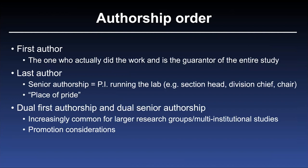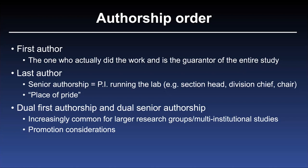Authorship order is important. First author should be — at least in our field and in the biological sciences — the individual who did the work and is the guarantor of the particular study. The last author position, a place of pride, is typically given to the senior individual, either the PI running the lab, your division chief, or chair. There is an increasing tendency, given the multidisciplinary and multi-institutional nature of a lot of research, to designate individuals as dual first authors or even dual senior or corresponding authors, and these designations are increasingly recognized and supported by journals.